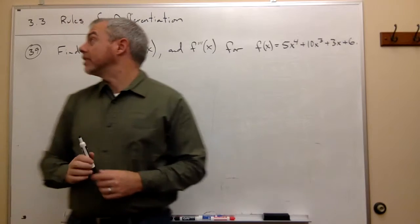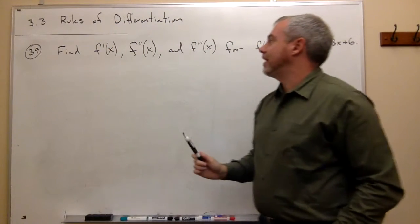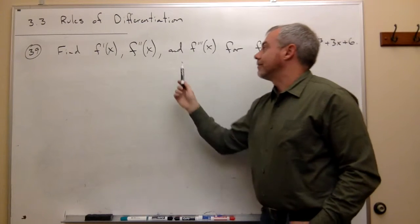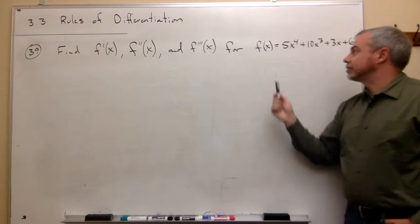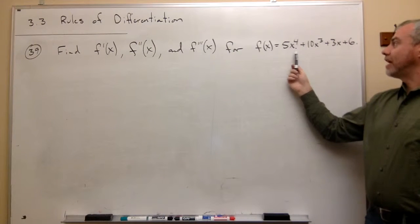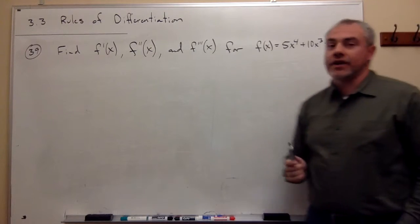Now let's take a look at number 39. Number 39 asks us to find f prime of x, f double prime of x, and f triple prime of x for the following function, that f of x is equal to 5x to the fourth plus 10x cubed plus 3x plus 6.